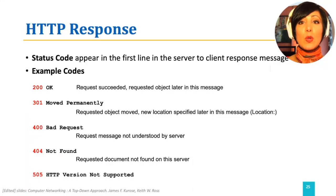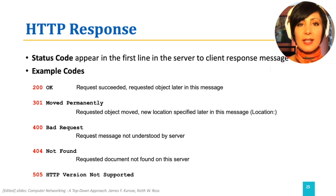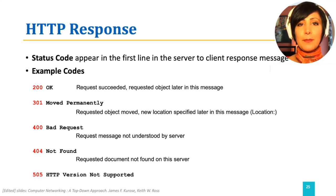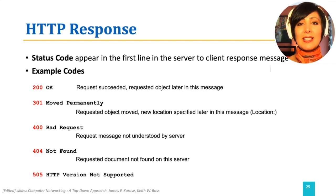The status code in the HTTP response shows the status of the server response to the client request. If the request succeeded and the requested object is in the entity body, 200 OK is the status code and phrase. Otherwise, one of the error codes will be returned — among which, I'm sure you are familiar with the famous 404 Not Found. This slide lists a few additional well-known HTTP response status codes and phrases. For a more complete list and the structure of the statuses, please refer to the HTTP 1.1 RFC.